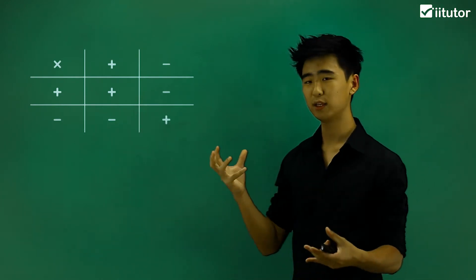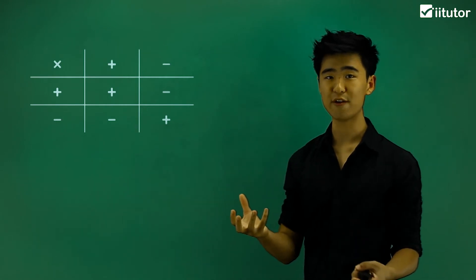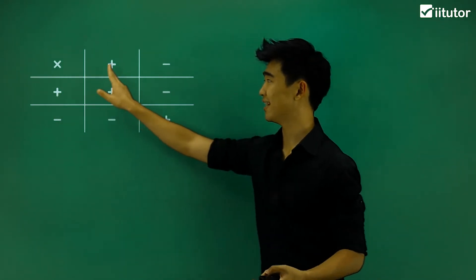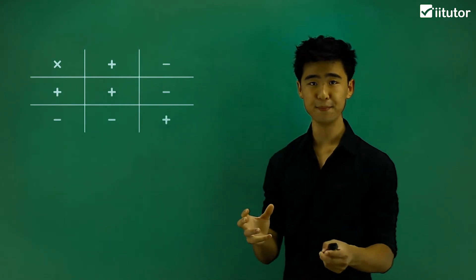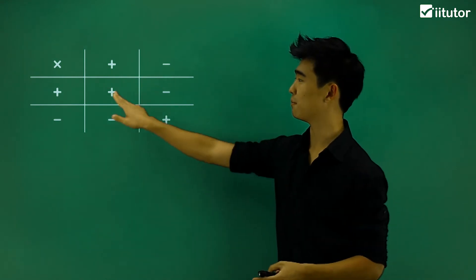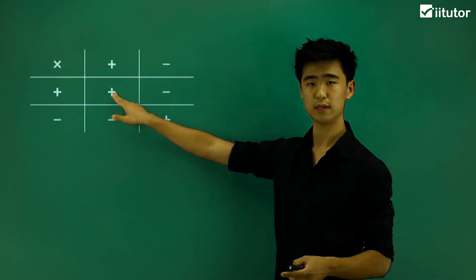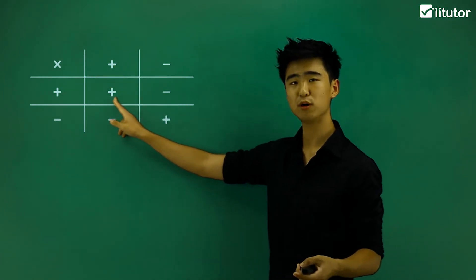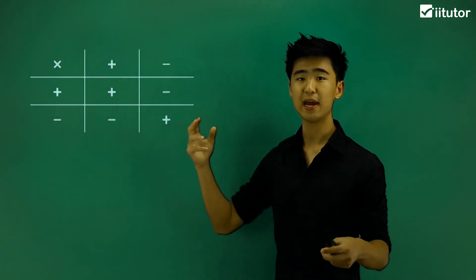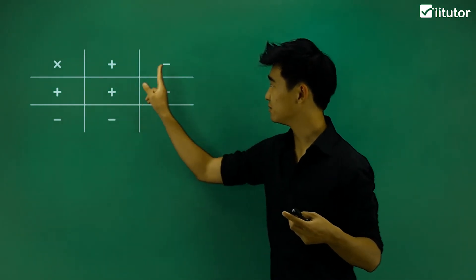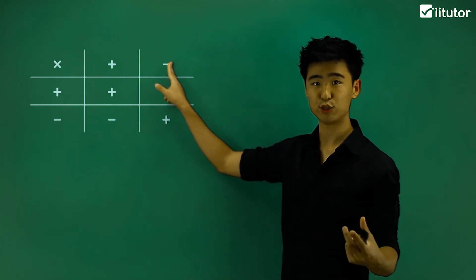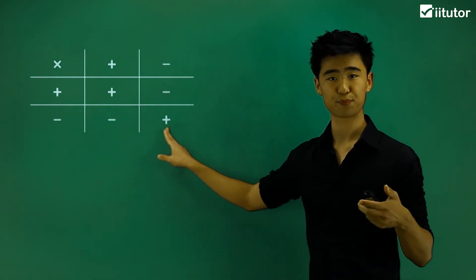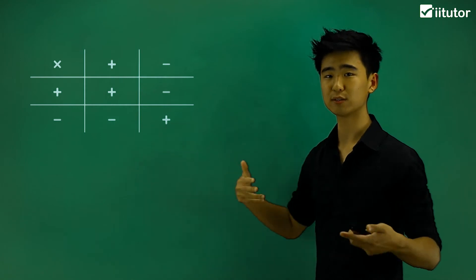One little note to take away: when you multiply two signs that are the same, then we get a positive result. So positive times positive gives positive, and negative times negative — the same signs multiplied together — will also give me a positive result.